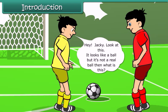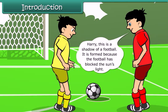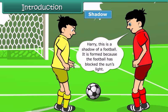Hey, Jackie, look at this. It looks like a ball, but it's not a real ball. Then what is this? Harry, this is a shadow of a football. It is formed because the football has blocked the sun's light. So now let us learn more about shadow and its formation.